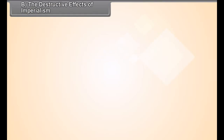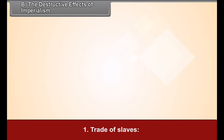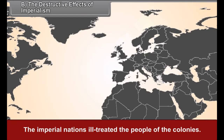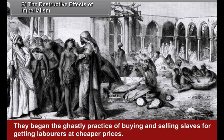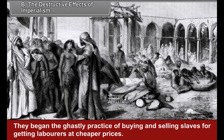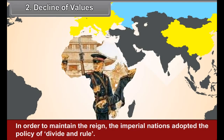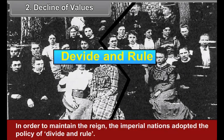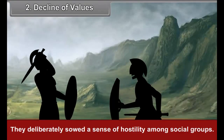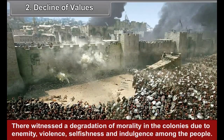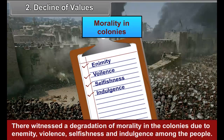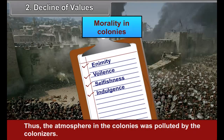The destructive effects of imperialism. First, trade of slaves. The imperial nations ill-treated the people of the colonies and began the ghastly practice of buying and selling slaves for getting labourers at cheaper prices. Second, decline of values. In order to maintain the reign, the imperial nations adopted the policy of divide and rule. They deliberately sowed a sense of hostility among social groups. There witnessed a degradation of morality in the colonies due to enmity, violence, selfishness and indulgence among the people. Thus, the atmosphere in the colonies was polluted by the colonizers.